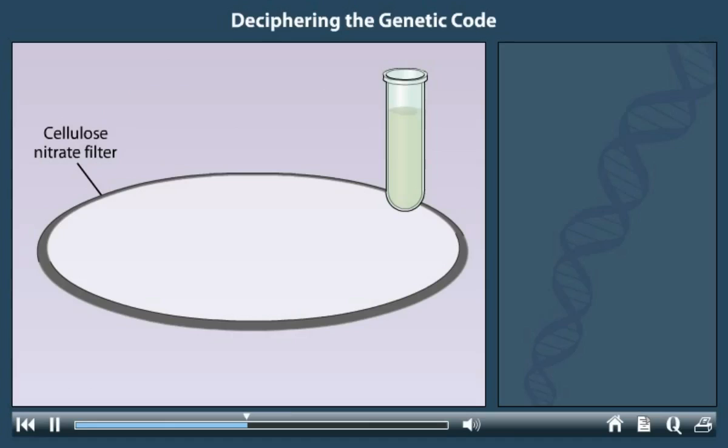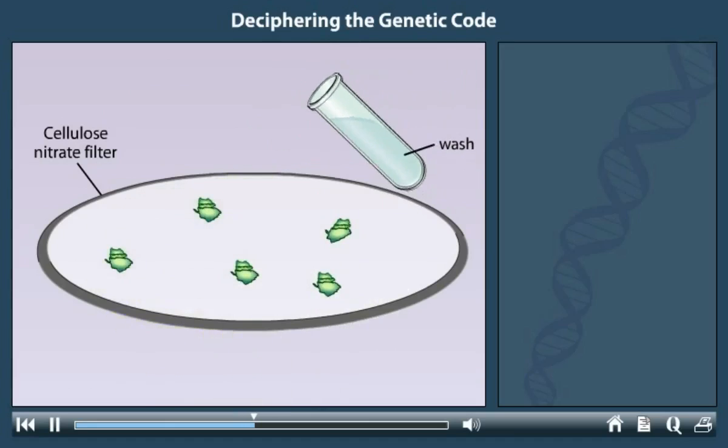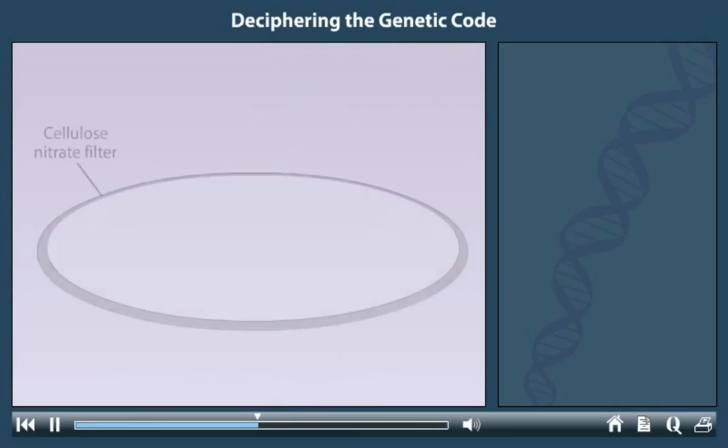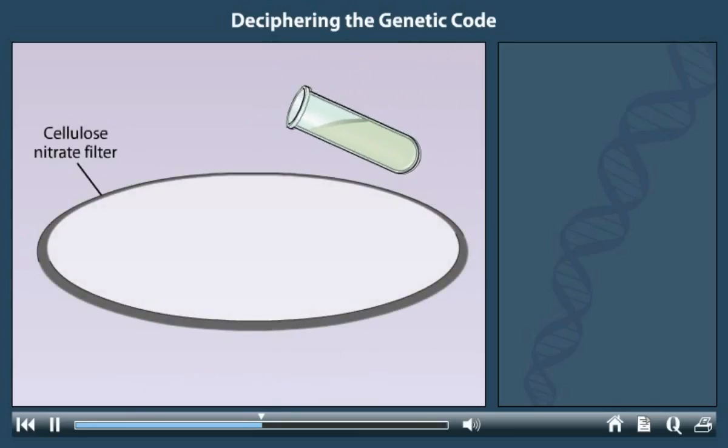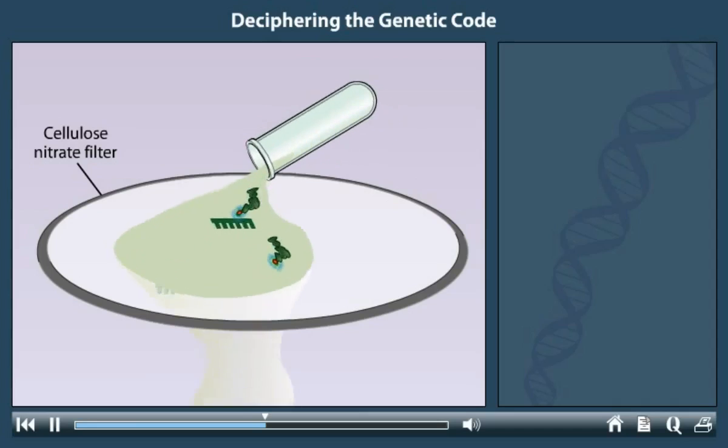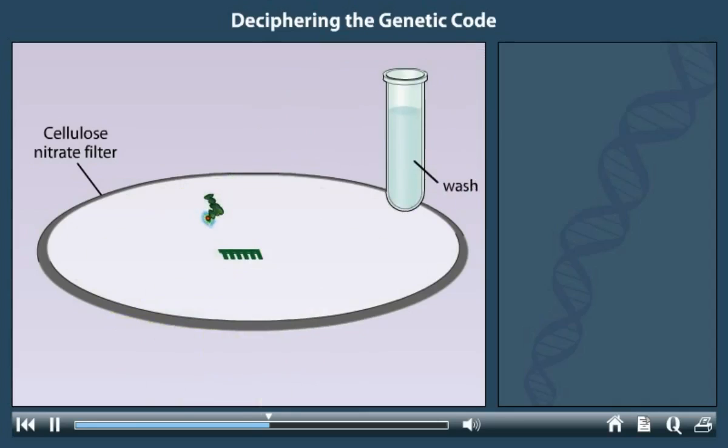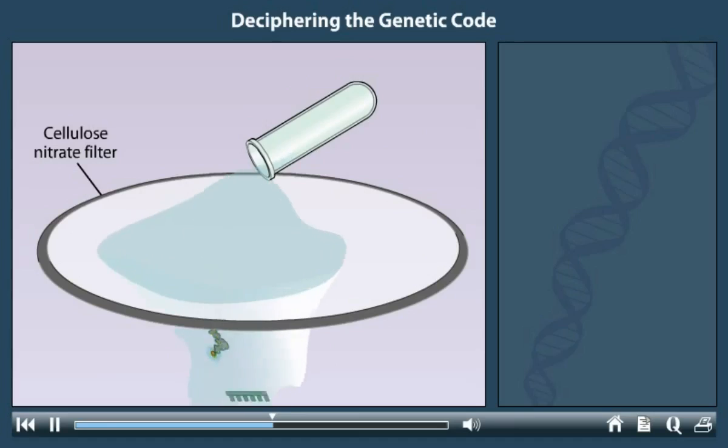In addition to the reaction mixture, the assay relied on the function of a membrane filter made of the chemical cellulose nitrate. This filter has special properties. If ribosomes are poured onto the filter, the ribosomes stick while the fluid goes through the filter. A washing step does not dislodge the ribosomes. Although the ribosomes stick to the filter, neither the tRNA molecules nor the poly-U RNA molecules stick. Each type of molecule can flow through the porous filter during a washing step. The ability of the ribosomes but not the other molecules to bind to the filter was the key to the assay.